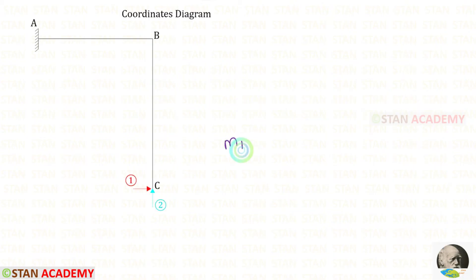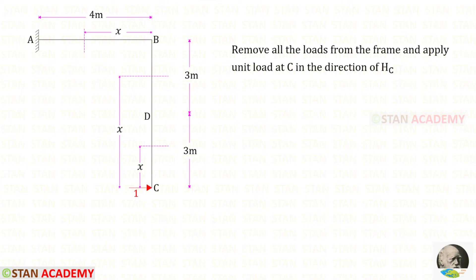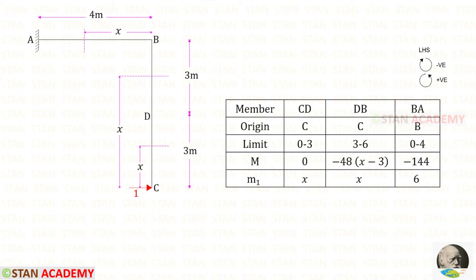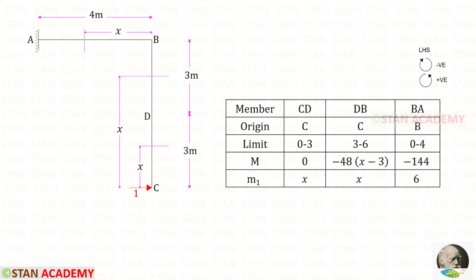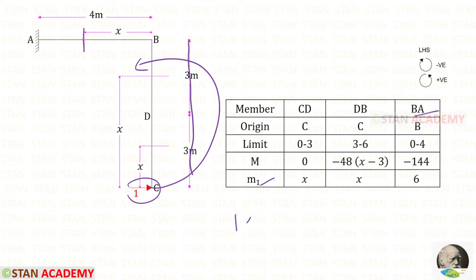Now we are going to find the moment M1. We remove all loads from the frame and apply a unit load in the direction of HC, our first coordinate. For M1 in CED, up to the section we have only the unit load acting in the anticlockwise direction, so it is positive and the distance is x, giving M1 = x. For DB, the unit load is also anticlockwise, so M1 = x. For BA, the unit load is anticlockwise and the distance is 6, giving M1 = 1 × 6 = 6.